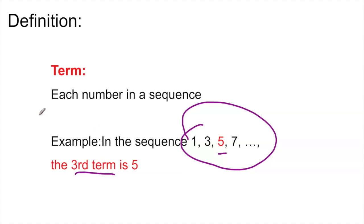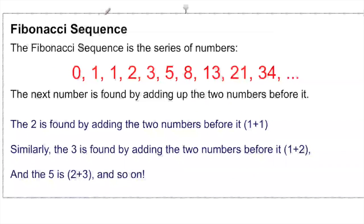We move on to the next slide. The whole point of this lesson is to talk about the Fibonacci sequence. Look at these numbers. The Fibonacci sequence is a series of numbers: zero, one, one, two, three, five, and so on and so forth.